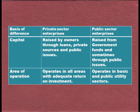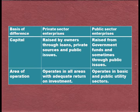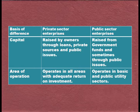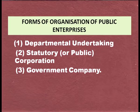Private sector enterprises operate in all areas where there is adequate return on investment — profit is the major criteria. Public sector enterprises operate in basic and public utility sectors, providing infrastructural facilities. The forms of public sector enterprises include departmental undertaking, statutory corporation, and government company.